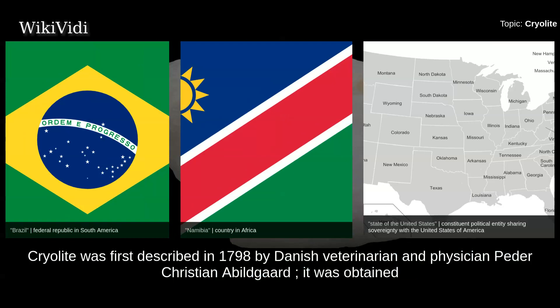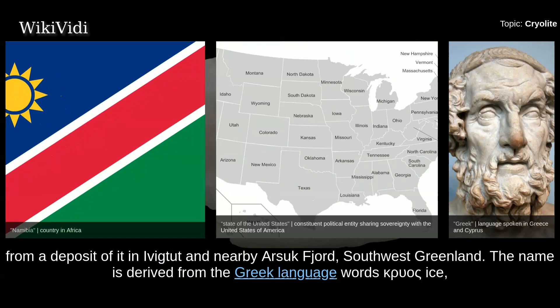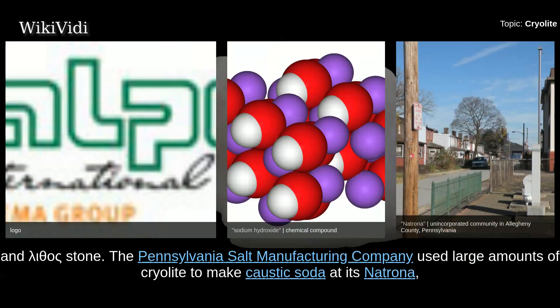Cryolite was first described in 1798 by Danish veterinarian and physician Peder Christian Abildgaard. It was obtained from a deposit near Arsuk Fjord in southwest Greenland. The name is derived from the Greek words 'kryos' meaning ice and 'lithos' meaning stone.